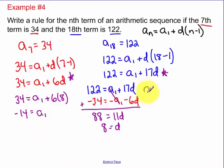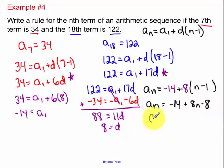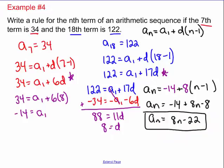Now it's just a matter of plugging into your a sub n formula. a sub n is equal to a sub 1, which we just found to be negative 14, plus the common difference is 8 times n minus 1. Again, now it's just a matter of simplifying. And we simplified, and we have our rule or our equation for our nth term.